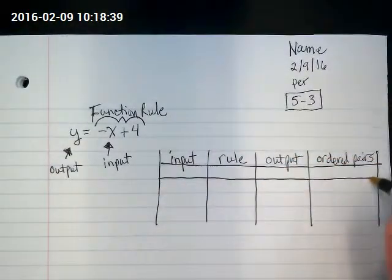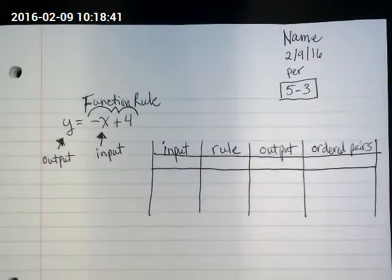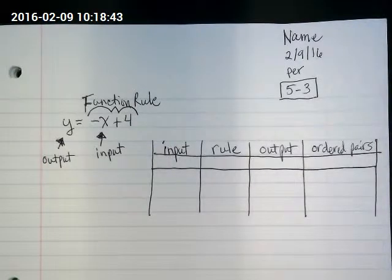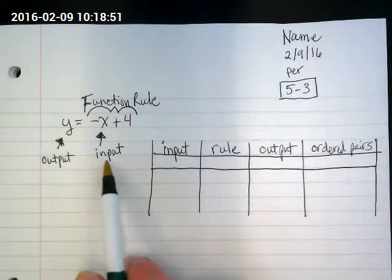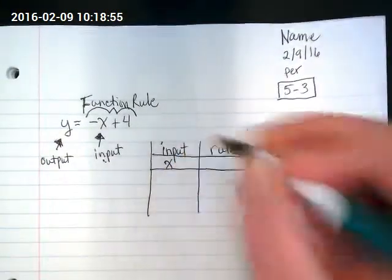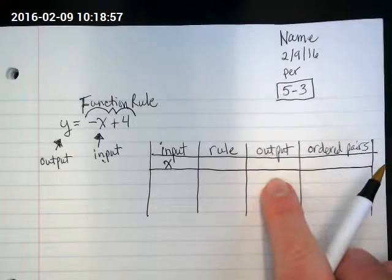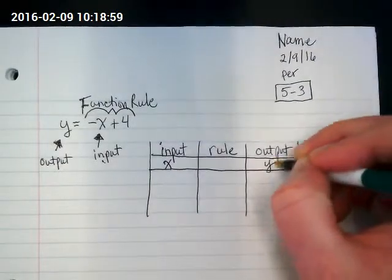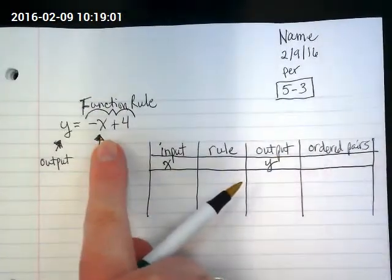So not only do we have words for headings, but we also have a second row of headings that includes variables and numbers. So looking back at our equation, what's the input? x. What's the output? y. What's our rule here?